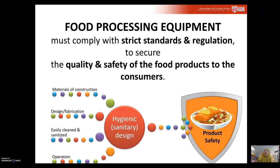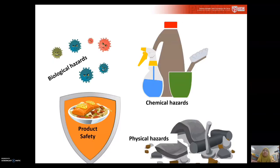By considering these criteria when you design the equipment, you can protect the product safety. This is extra criteria compared to when you design equipment for chemical industry. Among the hazards you need to know, the main hazard for food products is biological hazard.